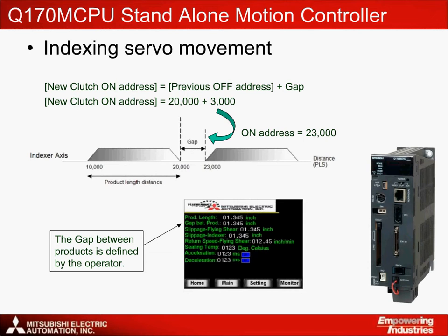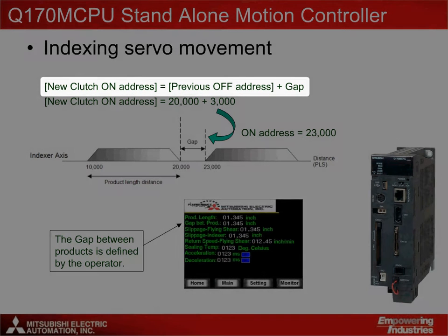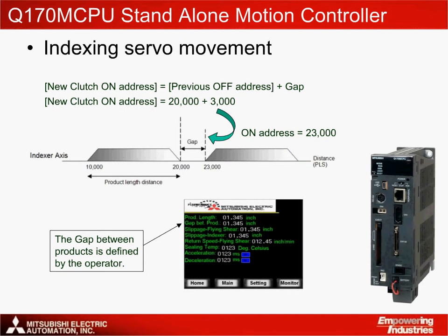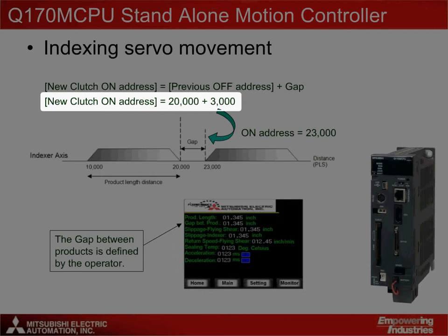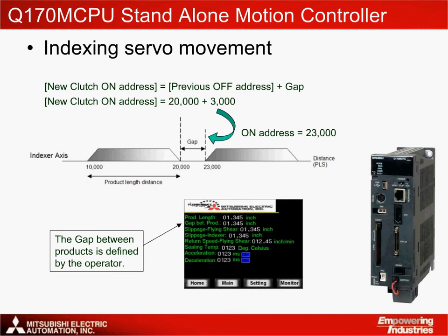The indexer axis starts and stops based on the on and off addresses for the address mode clutch, similar to the flying shear operation. Each new clutch on address is based on the previous off address, so the new clutch on address equals the previous off address plus the gap between the products. If the previous off address was 20,000, for example, and the gap is 3,000, the new clutch on address becomes 23,000.